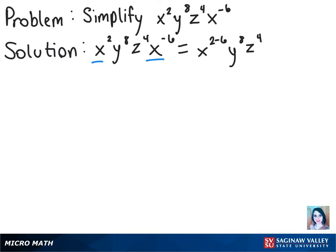So our next step we can solve 2 minus 6 for the exponent, so we'll have x to the negative 4th power times y to the 8th times z to the 4th.